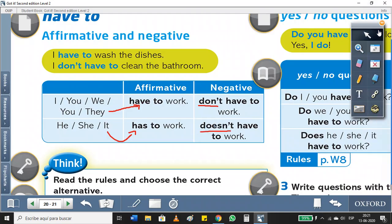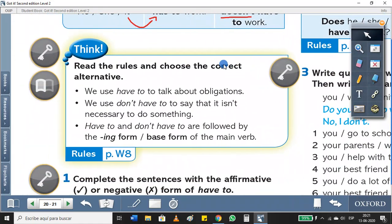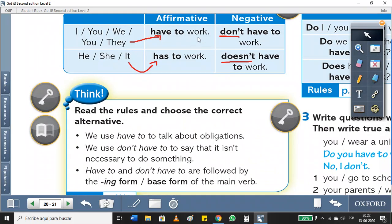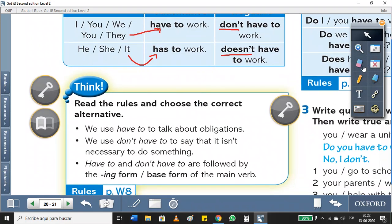Keep that information in mind because now we're going to complete this. Look at here. Think. Read the rules and choose the correct alternative. We use 'have to' to talk about obligations. I said that. We use 'don't have to' to say that it is not necessary to do something. So 'have to' and 'don't have to' are followed by the base form of the main verb. ¿Cómo tenemos el verbo acá? ¿Está con ing o con la forma base? Forma base, that's right.